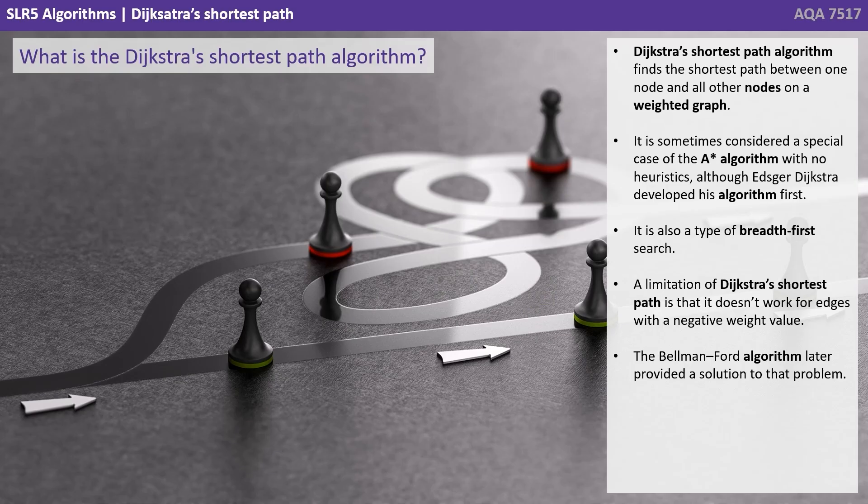Dijkstra's shortest path algorithm finds the shortest path between one node and all other nodes on a weighted graph. It is considered a special case of the A-star algorithm with no heuristics, although Edgar Dijkstra actually developed his algorithm first. It's also a type of breadth-first search. A limitation of Dijkstra's shortest path is that it doesn't work for edges with a negative weight value. The Bellman-Ford algorithm later provided a solution to this problem, but it's not covered as part of your course.